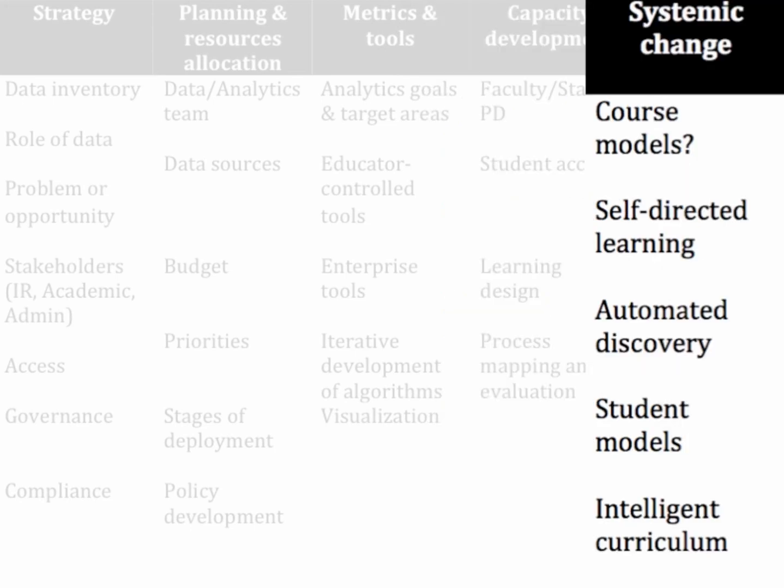Finally, there are the systemic change dimensions — how do we change as an institution, how do we teach differently, and how do we start to think of a university or school as an analytics-based system rather than one that ignores the large swath of data it generates on a regular basis?